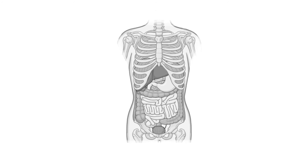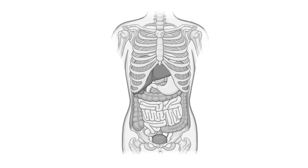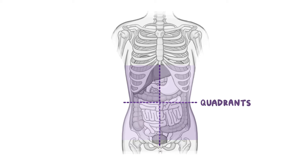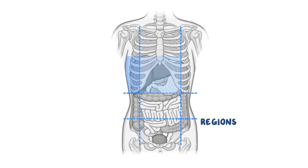You may have already noticed how many organs there are inside the abdominal cavity. So to make it easier to describe their location, the abdomen is often divided into anatomical quadrants, of which there are four, or regions, of which there are nine.